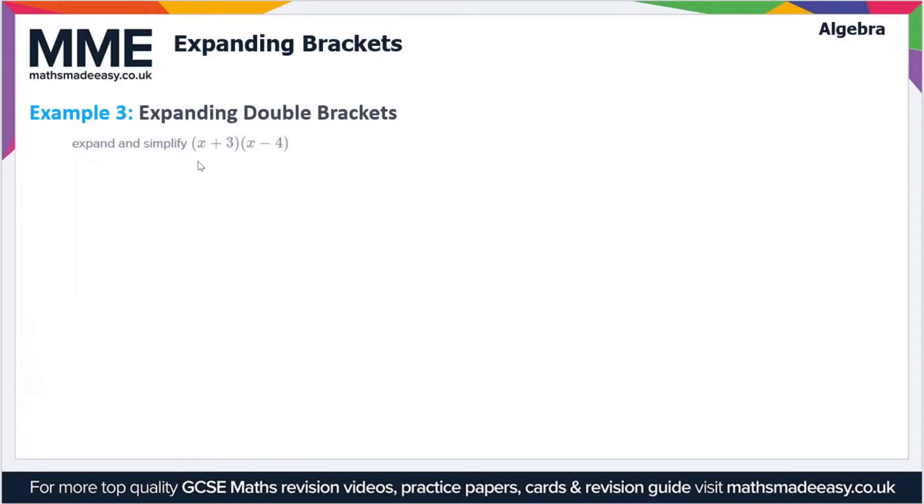Let's look at another example with expanding double brackets: (x+3) times (x-4), or x plus 3 lots of x minus 4. Let's do this step by step again using the FOIL method.